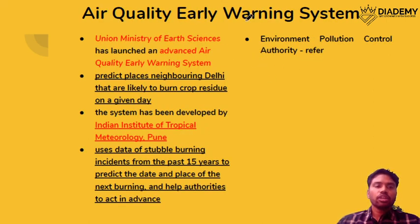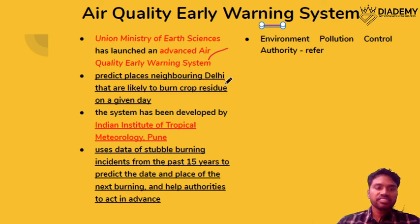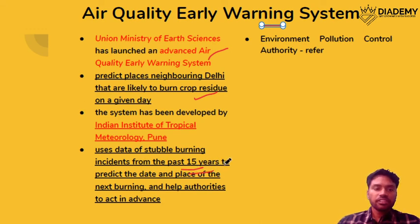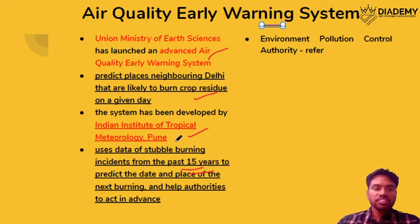The next topic is the air quality early warning system, launched by the Ministry of Earth Sciences. Its purpose is to predict which places near Delhi are likely to burn crop residue on a given day. The system uses 15 years of historical data to predict such events. It was developed by the Indian Institute of Tropical Meteorology (IITM), located in Pune — an important institution to remember.